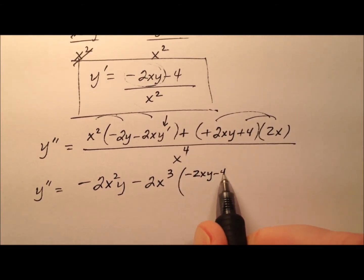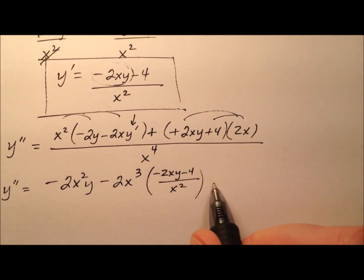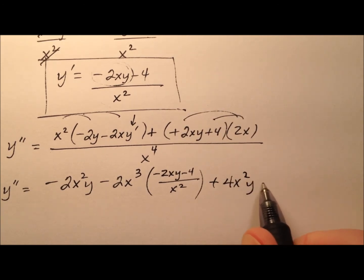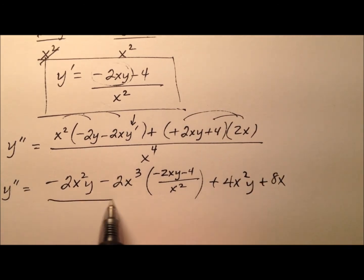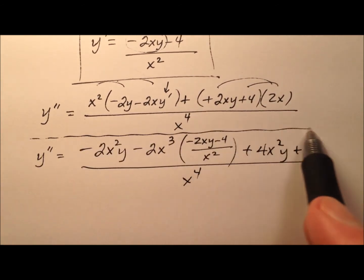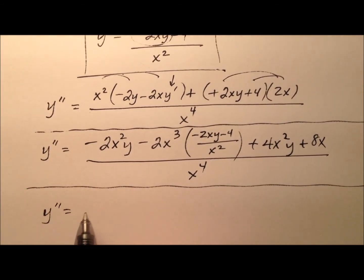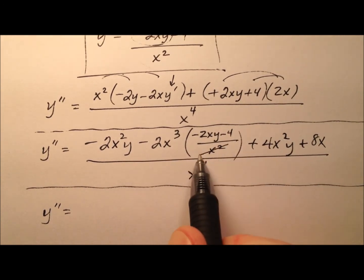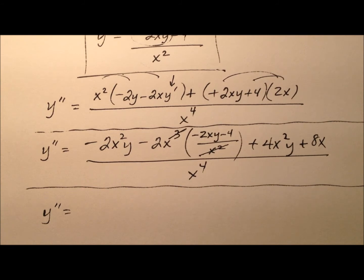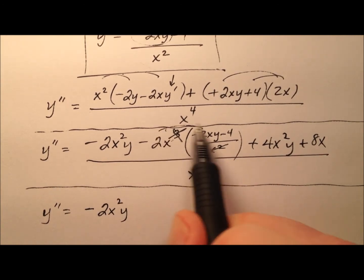And y prime is our 2xy minus 4 over x squared. When I distribute the 2x, I'll have plus 4x squared y plus 8x all over x to the fourth. So how can we finish simplifying? The x squared down here can cancel with those and give me just an x right there. So negative 2x squared y and we can distribute here as well. It's a negative 2x that we're distributing through here.